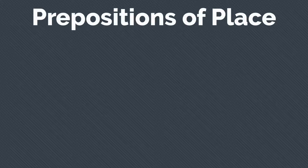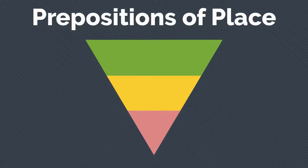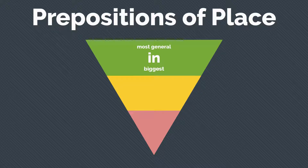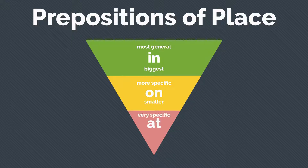When looking at these three prepositions, the most important thing that you need to remember is that in is the most general or biggest, on is more specific or smaller, and at is very specific or the smallest.